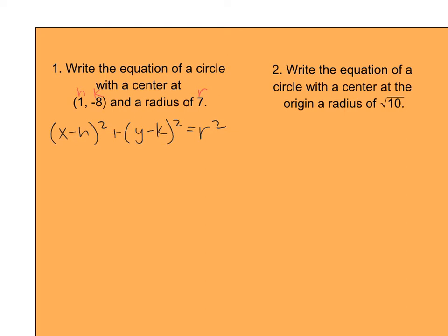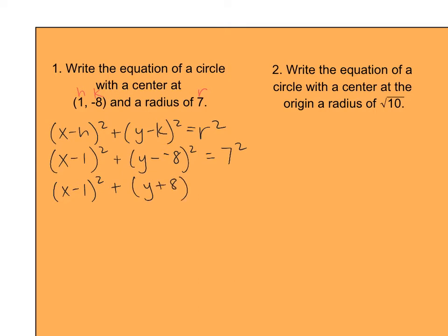The center of our circle is at (1, negative 8), so we go: x minus 1 squared plus y minus negative 8 squared equals 7 squared. Notice how I just plugged in the 1, the negative 8, and the 7. Now simplify. There's not much to simplify with x minus 1 squared, but when you have minus a negative, that changes to a plus. So this becomes y plus 8 squared, and 7 squared is 49. This is the final answer — the equation for a circle with center at (1, negative 8) and radius 7.